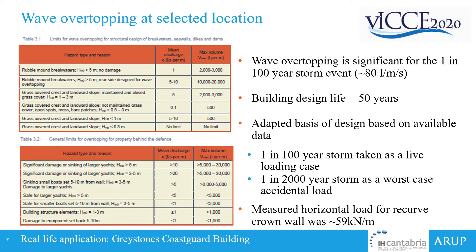Considering the building design life of 50 years — the breakwater was designed for a 100-year design life — the 50-year design life implies we should use a reduced storm event as the worst case. This would be the 1-in-1000-year storm for a 5% exceedance probability; however, that information wasn't available to us, so we adapted our basis of design to look at the 1-in-100-year storm as a live loading case, treated as a factored load under the Eurocode, while the 1-in-2000-year storm was taken as a worst-case accidental load which is not factored. It's also worth noting that the maximum measured horizontal load for the recurve kernel was 59 kN per metre from the breakwater design, which becomes quite a substantial horizontal load when applied over the full height and width of the building.